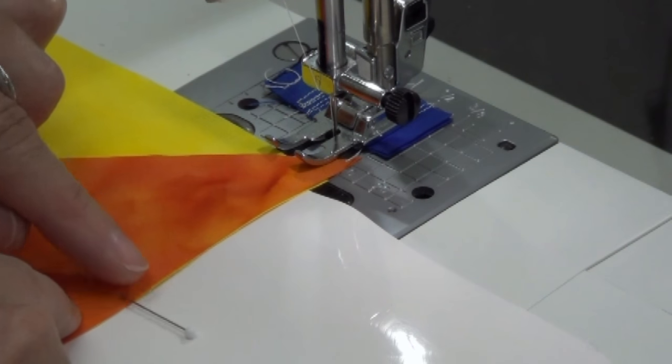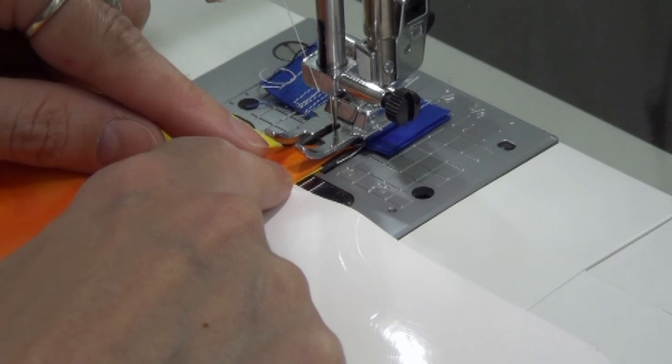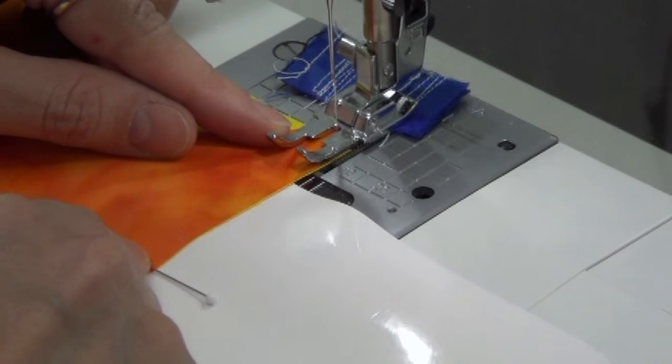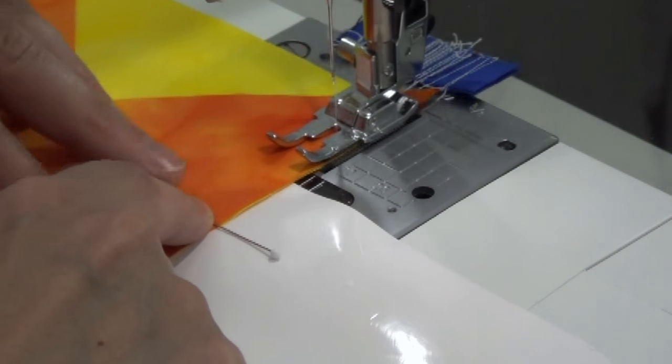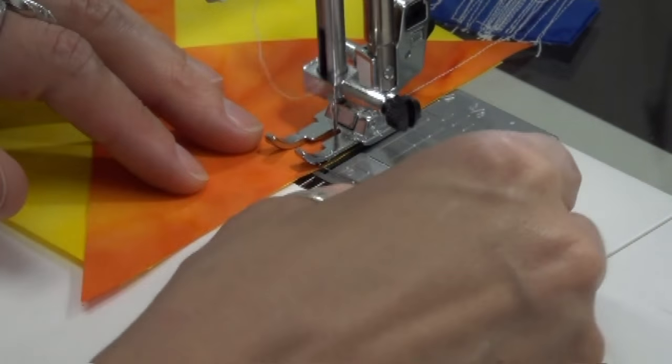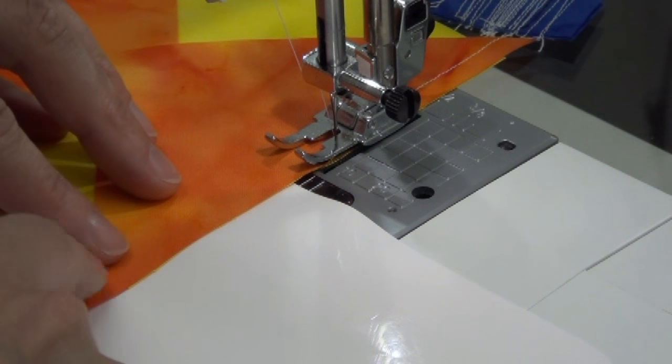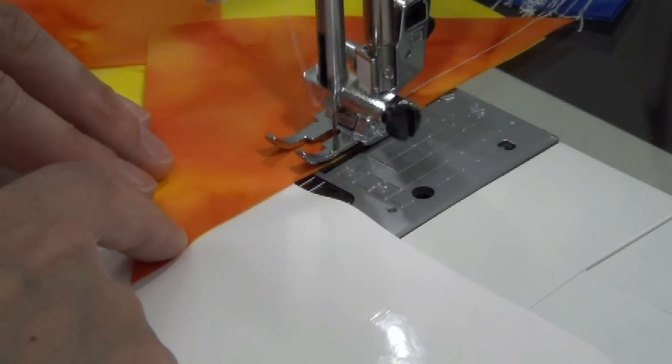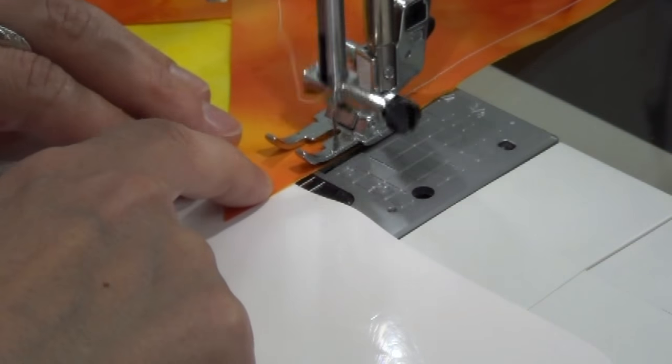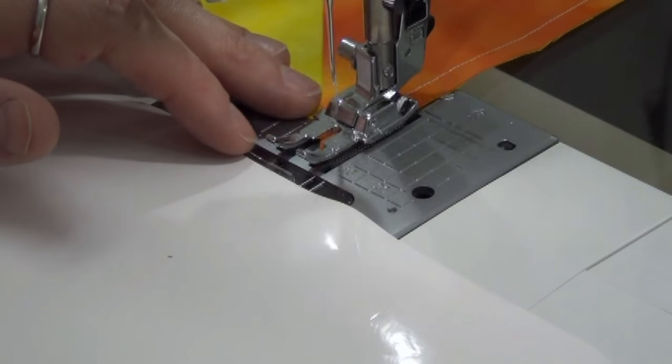I have my pin placed and I'm just smoothing out the triangle over the square, making sure everything's in nice alignment. I'll slide it underneath my foot and start stitching. I think it's important to pin in this situation because it lines everything up really nice and even. You're going to have this triangle overhang slightly on both sides so you want it to line up right in the middle of that square.